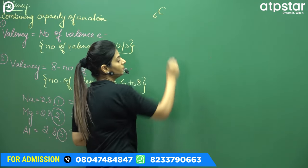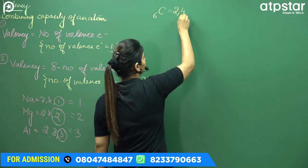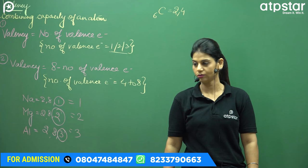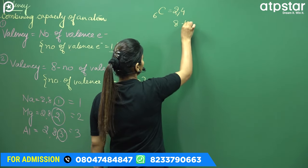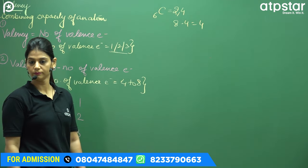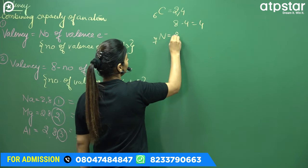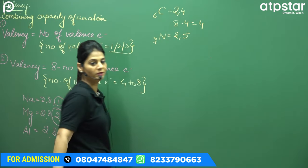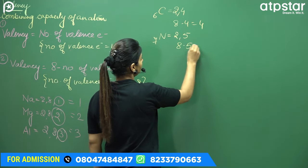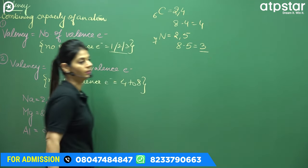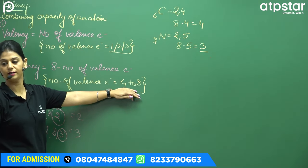Carbon — atomic number 6. Configuration: 1s², 2s², 2p², or simply 2, 4. There are 4 electrons in the last shell. When there are 4 electrons, valency = 8 − 4 = 4. Nitrogen — configuration 2, 5; that is 2s², 2p³ — 5 valence electrons. So 8 − 5 = 3. Valency is 3.